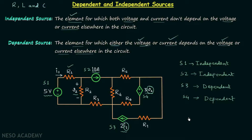To help identify whether a source is independent or dependent, we use different representations. For independent sources S1 and S2, a circle is used. For dependent sources S3 and S4, a diamond-like structure is used. Inside the circle or diamond, polarities or current direction are indicated depending on whether the source is a voltage source or a current source.